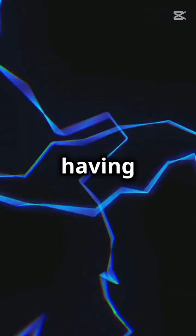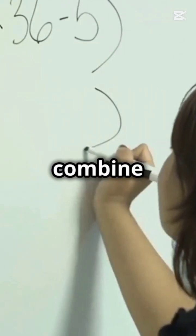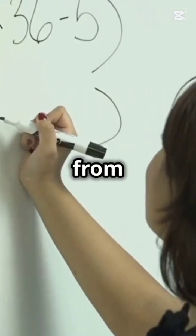So despite having direction, electric current behaves like a scalar. It's all about how quantities combine, and that's what sets it apart from true vectors. Catch you in the next one.